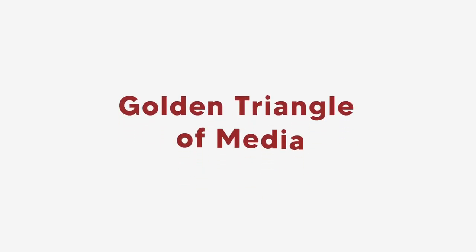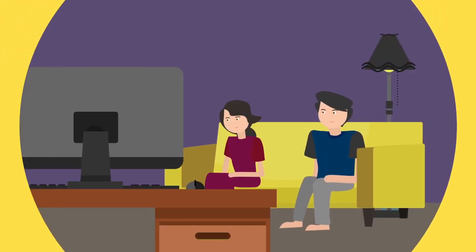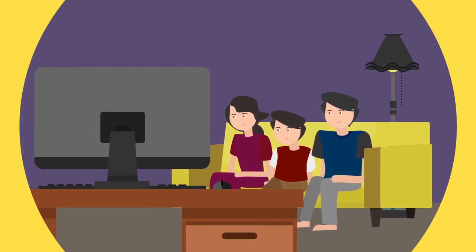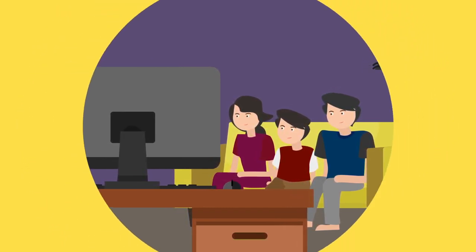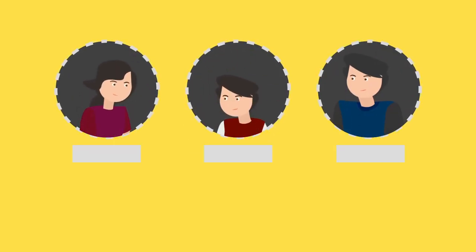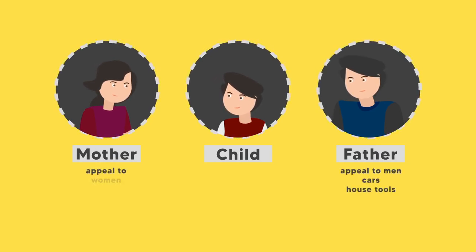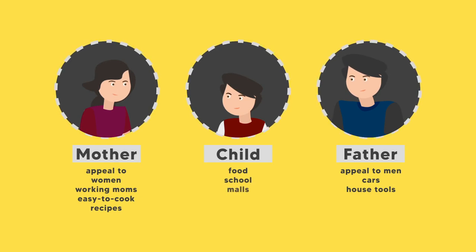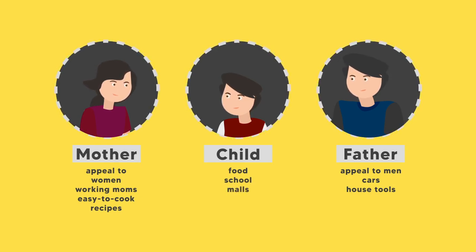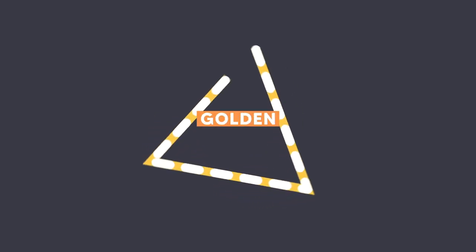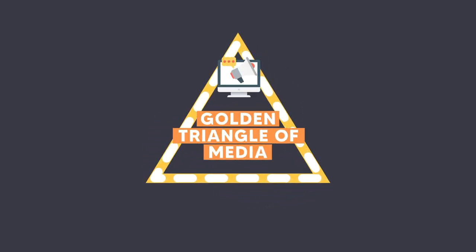The Golden Triangle of Media: the ethical usage of media relies on the hands of its users — it's either they get manipulated, or the other way around. Take for example when you and your family are watching television together. Each show has more than three or four gaps in which commercials will be shown, and most of the time everyone has their own preferences. Mom likes the ads for cooking, dad for cars, and the child loves the ones with jingles — because every member in the household is targeted by advertisers depending on their preferences and interests.